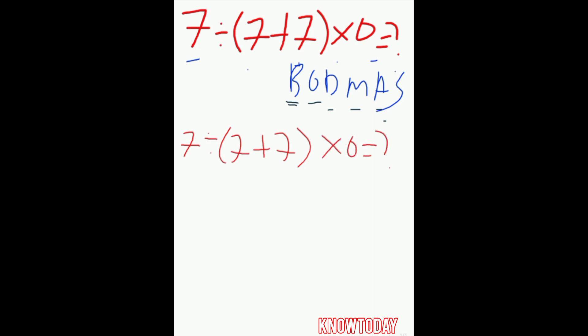Okay, like I said, to solve this kind of quiz we need to apply the law of BODMAS. So if you want to apply BODMAS here, the first thing we need to solve is what is in the bracket, this expression. So if you take 7 plus 7, that is 14. The quiz will now be 7 divided by 14 times 0 equals.